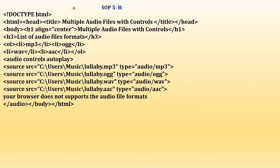For the coding of this program, we use an HTML5 structure: HTML, head, title, close title, head, then body. We have an H1 heading — 'Multiple Audio Files with Controls' — describing what the program is about. An H3 is given because they said the code must have the list of file formats being used. I've given an ordered list of audio file formats: MP3, OGG, WAV, and AAC, then closed the ordered list.